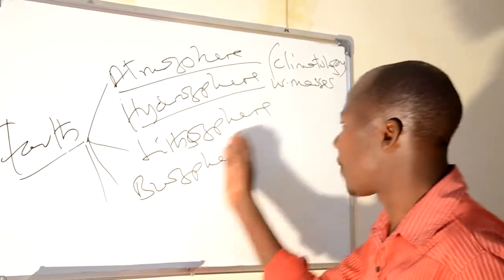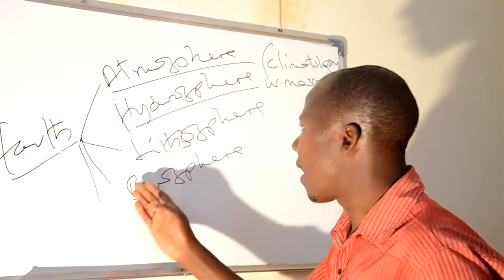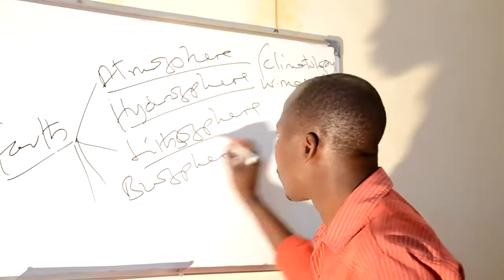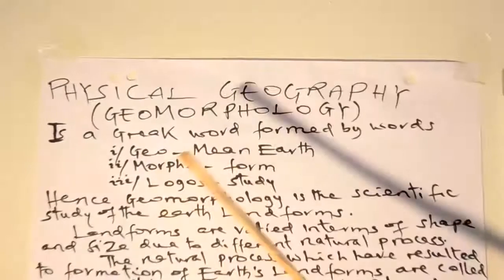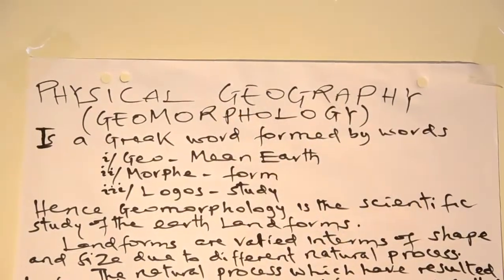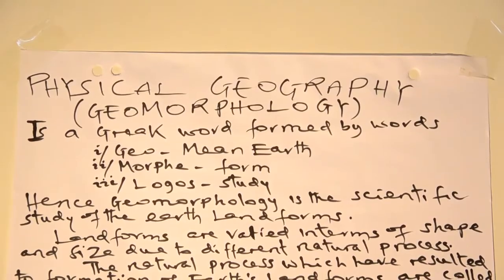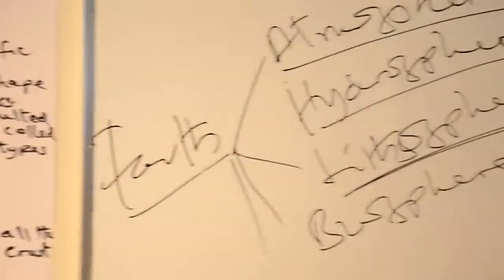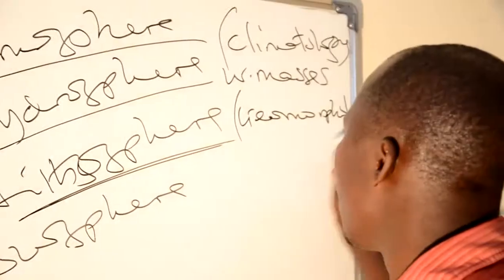The lithosphere is just based on the crust. Therefore, in the advanced level there is a certain topic which is called physical geography or geomorphology. In this lithosphere, or the crust, it consists of geomorphology as a topic at the advanced level.